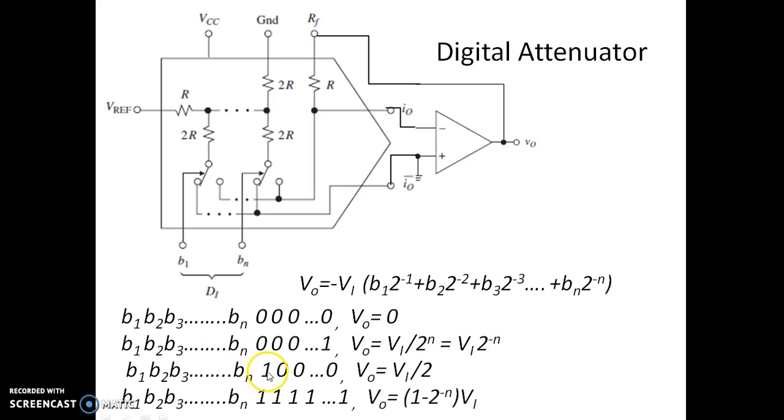If we have only the MSB as 1 and all of the other bits are 0, we are going to have the output voltage half of the input. You can see now the output is attenuated by 2 times. So if the input is 2 volt sine wave we are going to get output voltage of 1 volt sine wave.